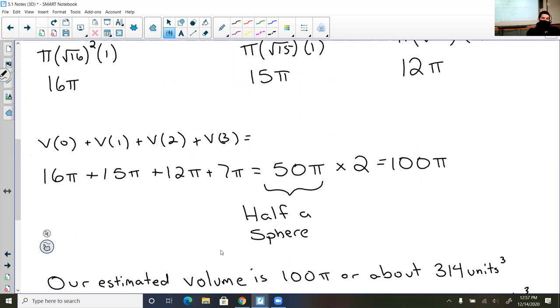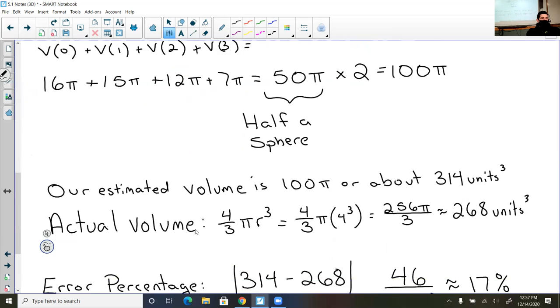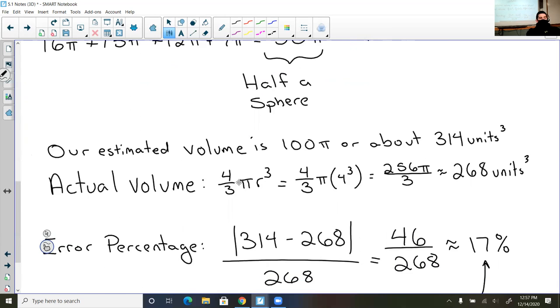Now, going back to reality, I do know the equation for the volume of a sphere. So I'm just going to check to see how close I was, and my actual volume should be four-thirds pi r cubed. I plug in 4 because the sphere has a radius of 4, and I get 256 pi divided by 3, which is about 268 cubic units.